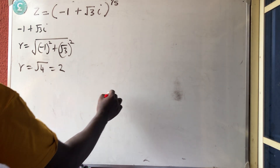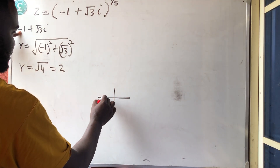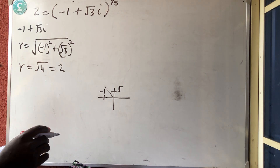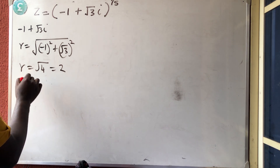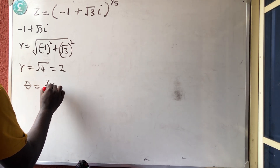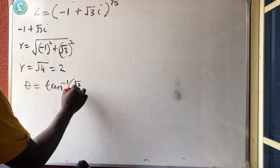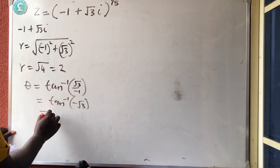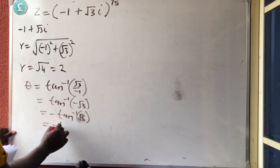To get your theta, don't forget to draw so that you don't make mistakes. This is negative x on this side, and this is positive y — so it is in the second quadrant. Any theta I am getting must fall from 90 to 180. So my theta is equal to tan inverse of (root 3 over minus 1), which is tan inverse of minus root 3, which is minus tan inverse of root 3.